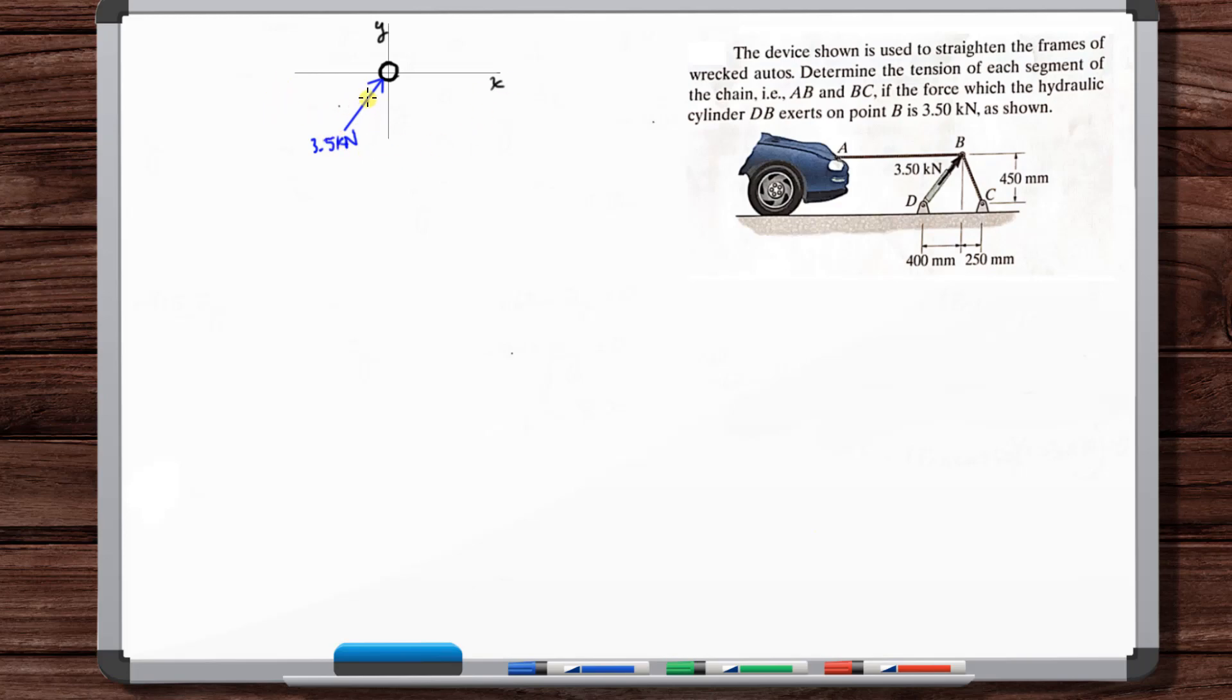Instead of using cosines and sines to get our angles, we could do that. But let's just go a different route here. So this ratio of rise to run is 450 to 400. So 9 to 8, so this is in a ratio of 8 to 9.